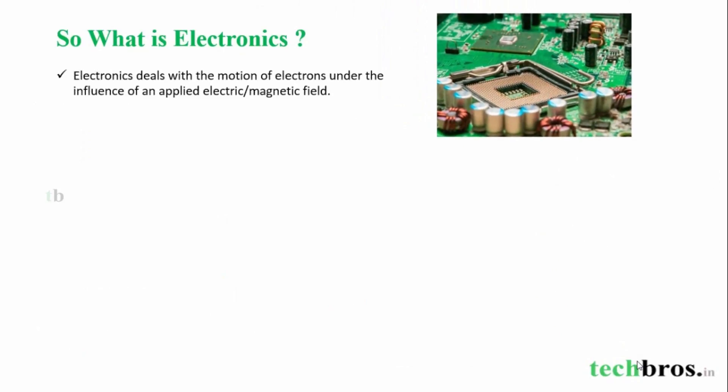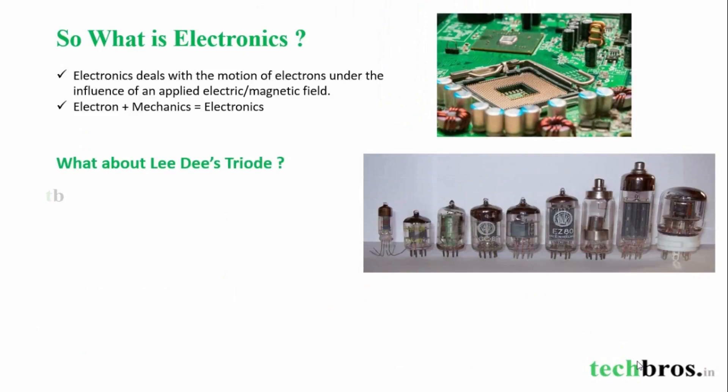So, what is electronics? Electronics deals with the motion of electrons under the influence of an applied electric or magnetic field. The vacuum triode can be used to amplify electric signals.